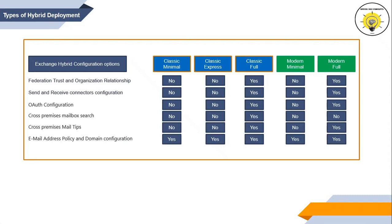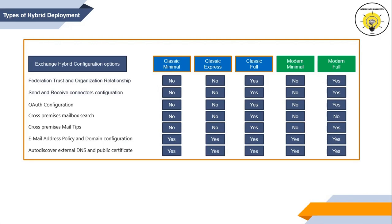Email address policy is enabled and the domain is added to accepted domains in all types of hybrid deployments. In every type of hybrid deployment, you need to configure an external DNS record for Autodiscover and you need a public certificate. Based on the type of hybrid deployment selected, the Hybrid Configuration Wizard will configure the appropriate features.